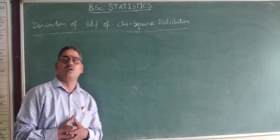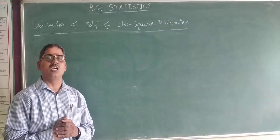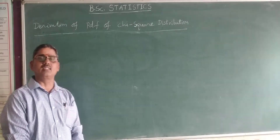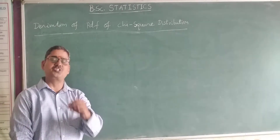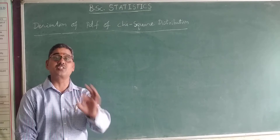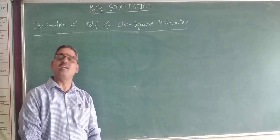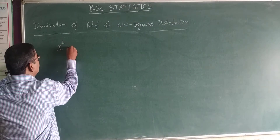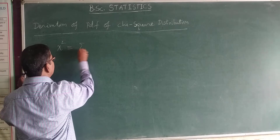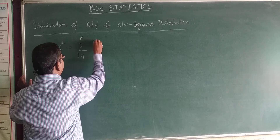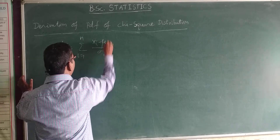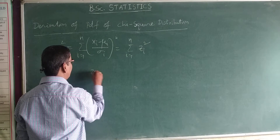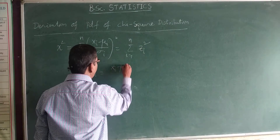Welcome to BSE statistics students. In this lesson, I explain the derivation of the probability density function of chi-square distribution, for which I consider the moment generating function of chi-square distribution. I consider a chi-square variate, which is the sum of squares of n independent standard normal variates: summation i=1 to n of (xi minus mu_i divided by sigma_i) squared, equivalent to summation i=1 to n of z_i squared, where z_i = (x_i - mu_i)/sigma_i.